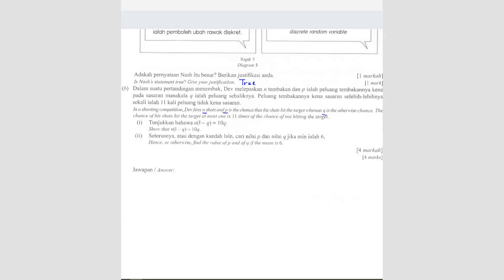The chance of his shot hit the target at most one is 11 times the chance of him not hitting the target. Show that... Okay, question 1 they asked to show. So this question, you have to base your... You have to form an equation. And that equation has to come from the last sentence here.